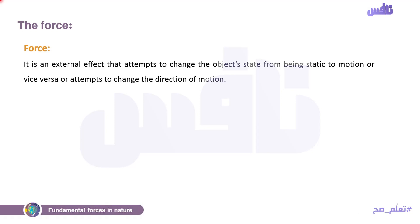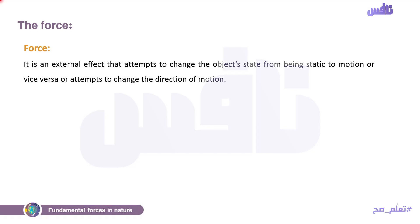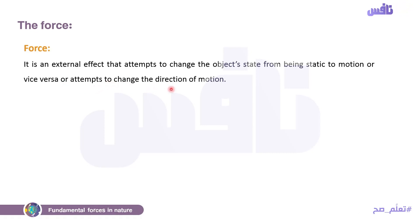يعني إيه كلام ده؟ يعني فيه static object، فيه object ما بيتحركش. هل هيتحرك ويغير its position؟ Of course not. إمتى يتحرك الobject ده؟ لما يبقى فيه external effect، لما يبقى فيه force applied on this object. فهيعمل إيه؟ change the object state from being static to motion. لو فيه object بيتحرك وهل هيقف؟ لا، مش هيقف لوحده إلا إذا كان فيه external effect، اللي هي force which changes the object from motion to being static. يبقى force is an external effect that attempts to change the object state from being static to motion or vice versa, or attempts to change the direction of motion.